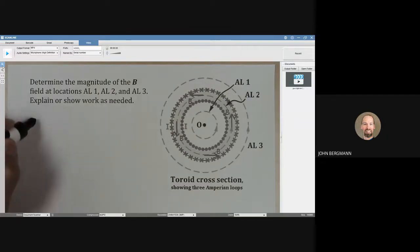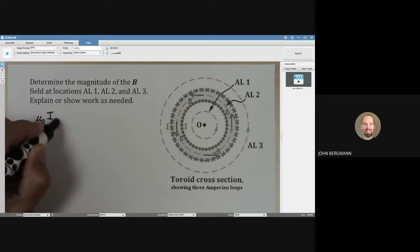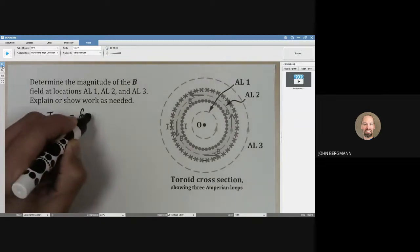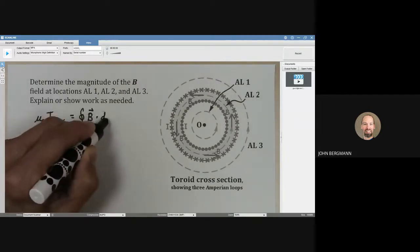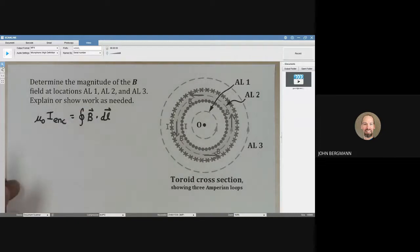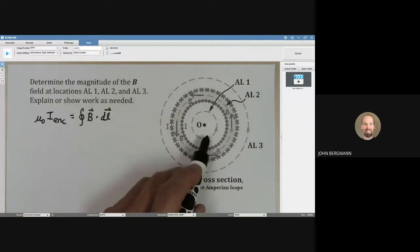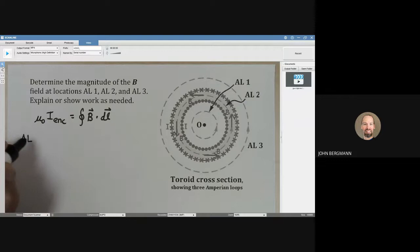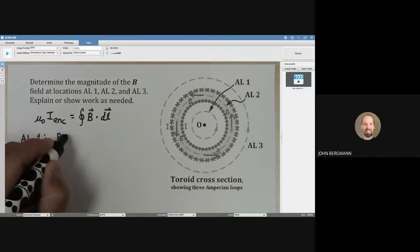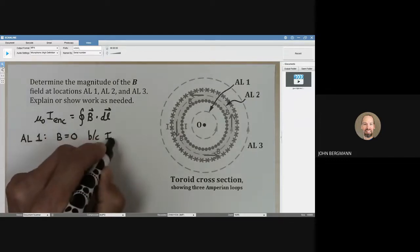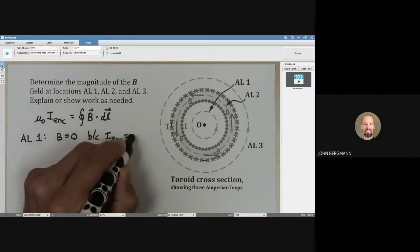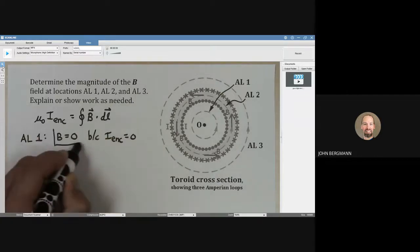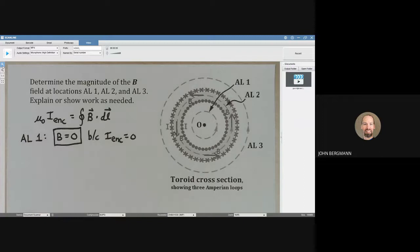So whenever we find the magnitude of a magnetic field we always use Ampere's law which looks like that. Now here's what we can do. Look at Amperian loop number one. There is no current that's enclosed in there. For Amperian loop number one the magnetic field magnitude is zero because the I enclosed equals zero. There is no current that is enclosed within Amperian loop number one.